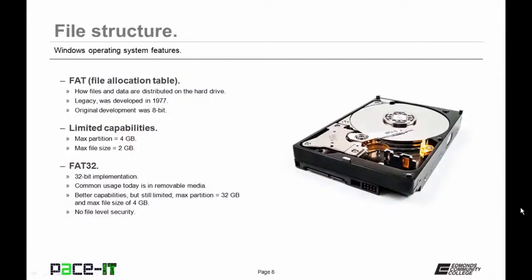FAT32 came along as a vast improvement — a 32-bit implementation. Its common usage today is in removable media like USB flash drives and camera memory cards. Max partition is 32 gigabytes and max file size is 4 gigabytes. It offers no file-level security.